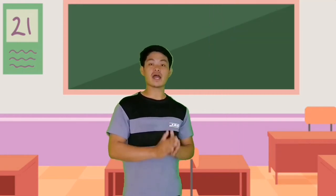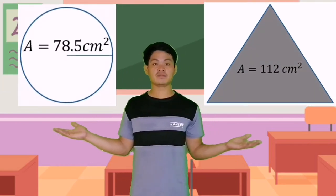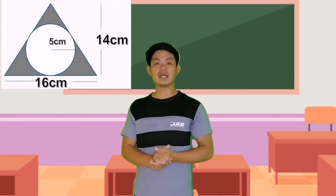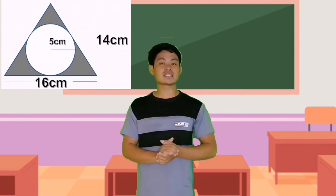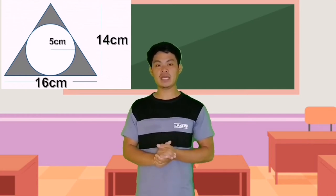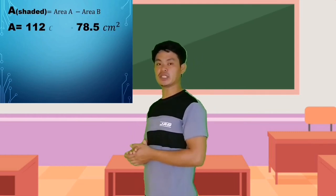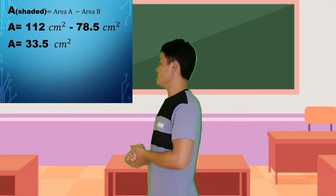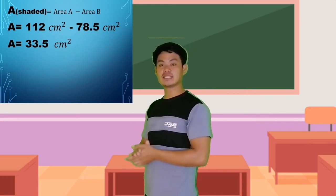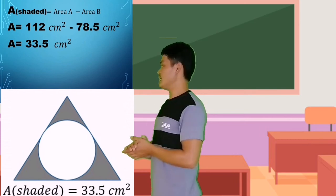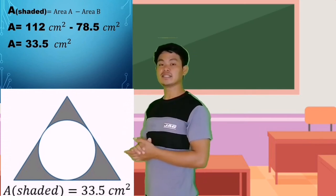Now, to find the area of the shaded part, we subtract shape B from shape A. Area of the shaded region equals shape A minus shape B. Substituting the values: 112 cm squared minus 78.5 cm squared. Therefore, the area of the shaded region is 33.5 cm squared.